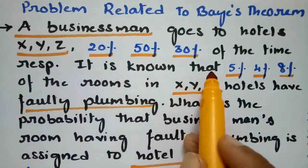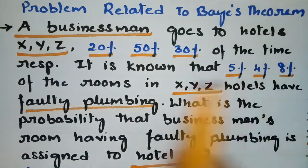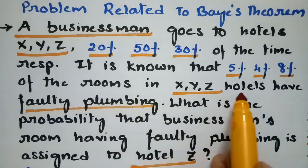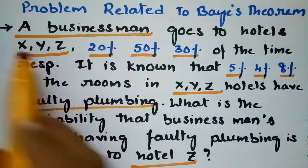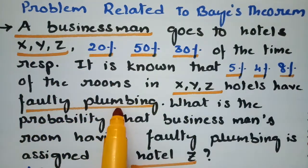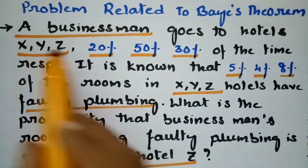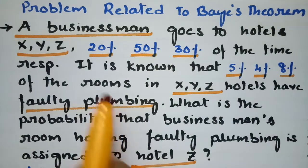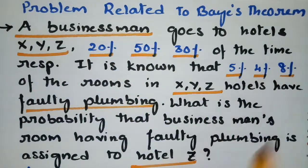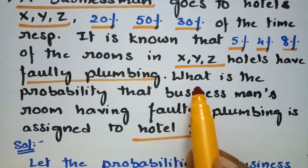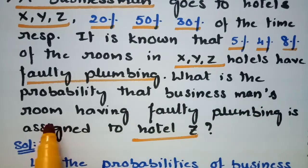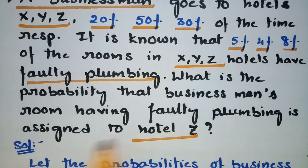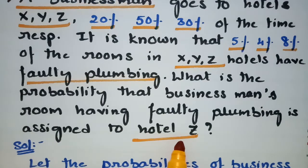It is known that 5 percent, 4 percent, 8 percent of the rooms in hotels X, Y, Z have faulty plumbing. So the faulty plumbing in hotel X is 5 percent, in hotel Y is 4 percent, and in hotel Z is 8 percent. The question is: what is the probability that the businessman's room having faulty plumbing is assigned to hotel Z?